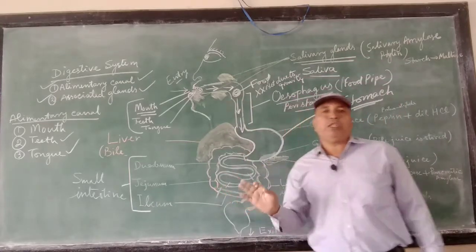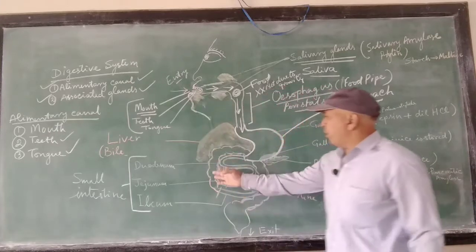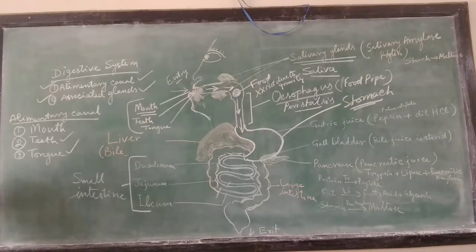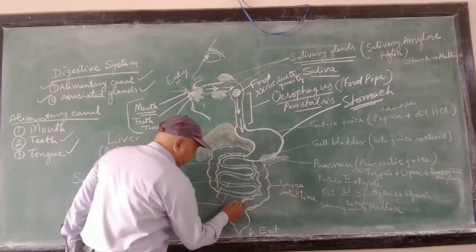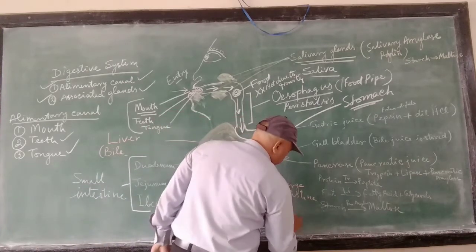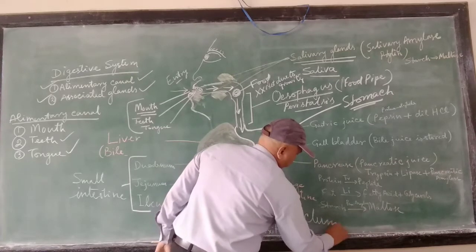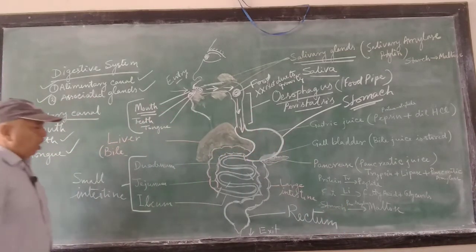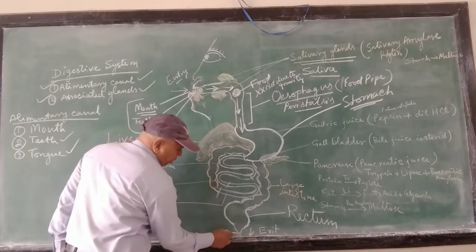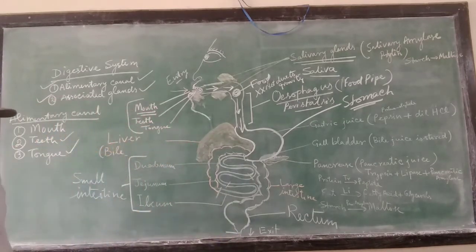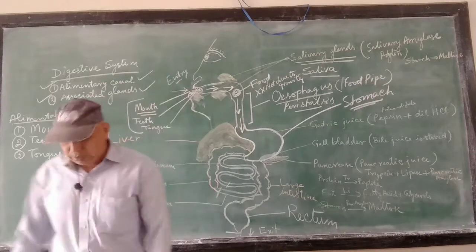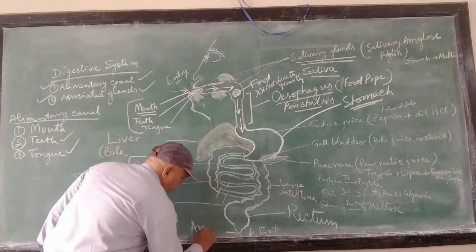The last part of the alimentary canal is a bag-like collector, and the name of this is rectum. Ultimately, this rectum has an opening, through which the waste — the unwanted part of the food — is pushed out of the body. This opening is known as anus, A-N-U-S.